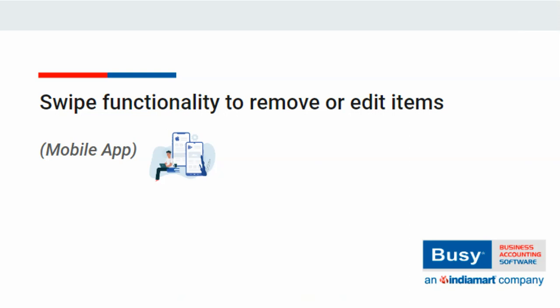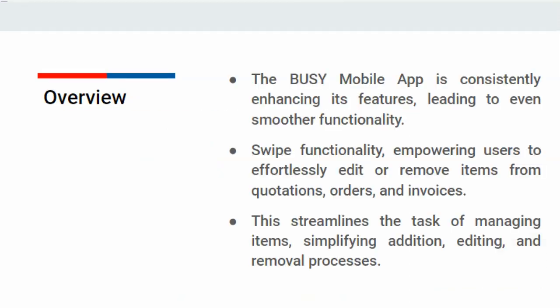Swipe functionality to remove or edit items in the Busy mobile app. The Busy mobile app is constantly improving enhancements, resulting in even smoother functionality. One of these enhancements includes the swipe functionality, which allows users to easily remove or edit items within quotations, orders, and invoices.